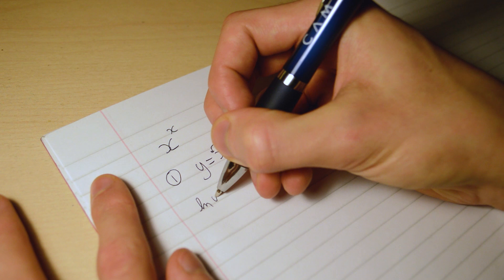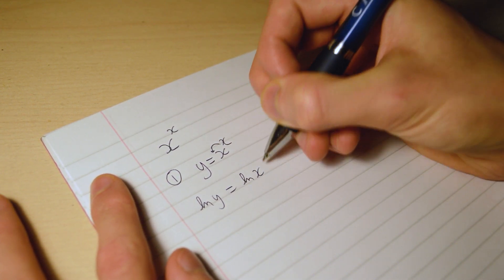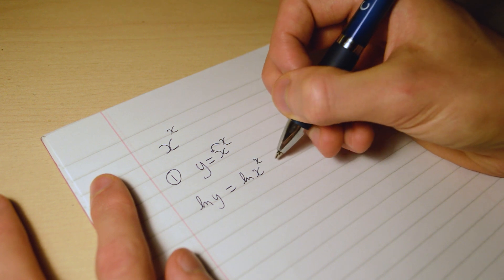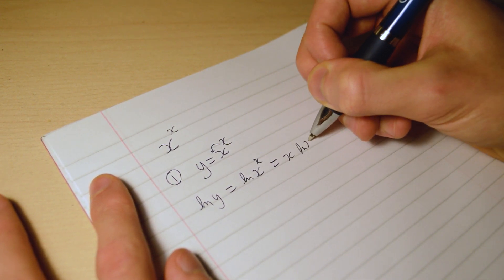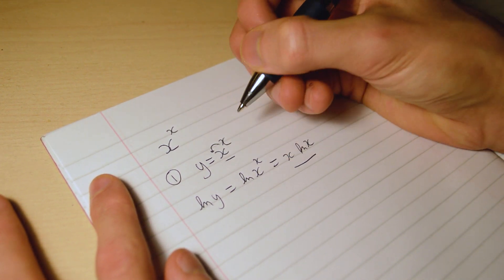So if we take the logarithm of both sides we get this, and now this is equal to x log x, which is good because we can differentiate this, whereas we couldn't differentiate the original.